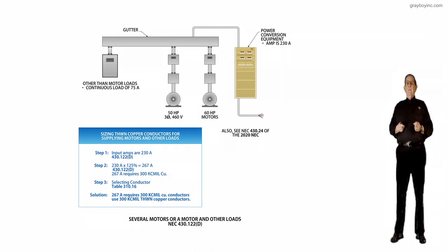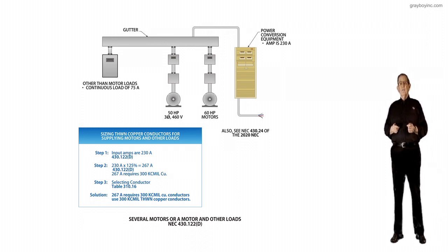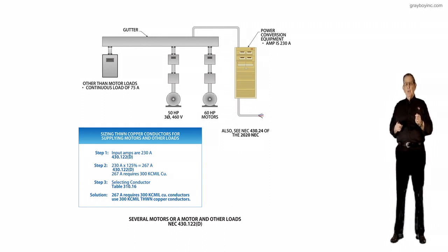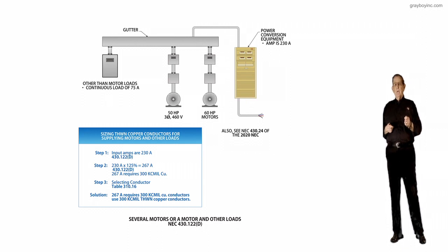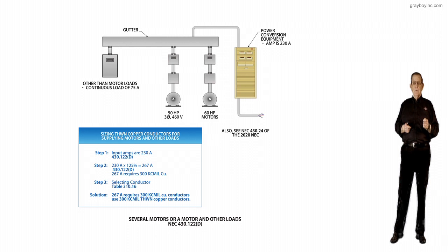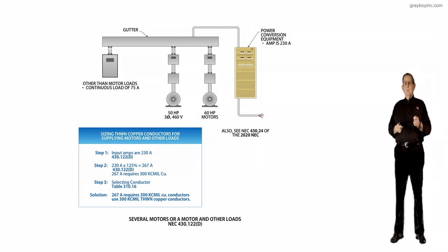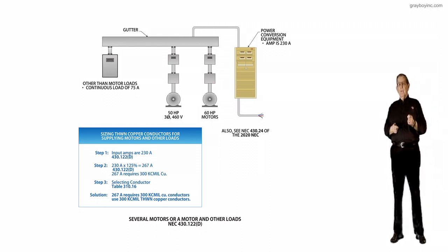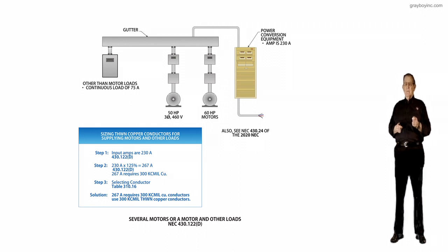to clarify that when sizing conductors for several motors and other loads on one branch circuit or feeder, the user needs to use the rated input current to the power conversion equipment, not the horsepower rating of the motor on the output of the power conversion equipment in the calculations.